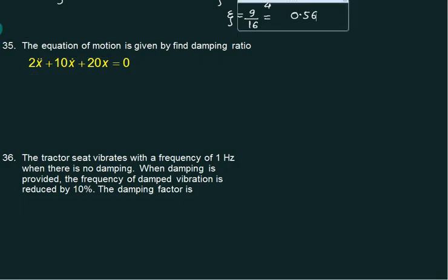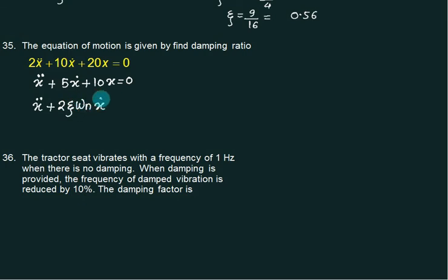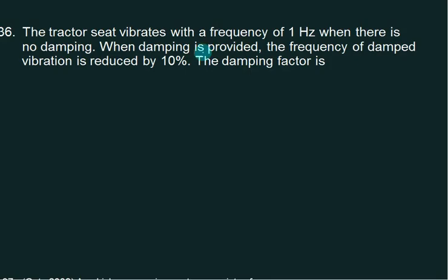2X dot plus 10X plus 20X. So X double dot plus 5X dot plus 10X equals 0. Standard equation is X double dot plus 2 zeta omega n. Omega n is root 10. 2 zeta omega n is 5, so zeta equals 5 divided by 2 divided by root 10, which is 0.79.